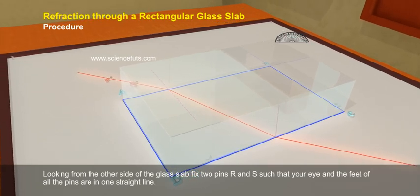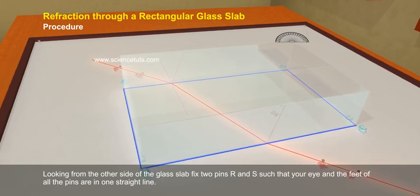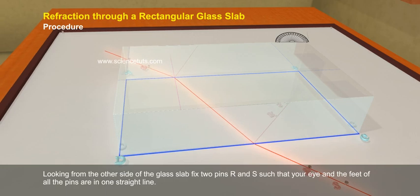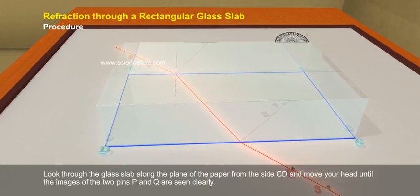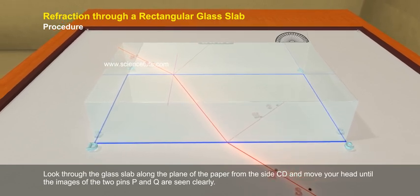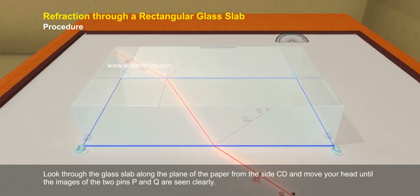Looking from the other side of the glass slab, fix two pins R and S such that your eye and the feet of all the pins are in one straight line. Look through the glass slab along the plane of the paper from the side C.D. and move your head until the images of the two pins P and Q are seen clearly.